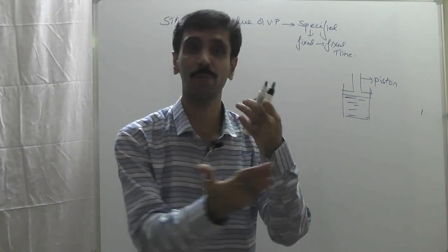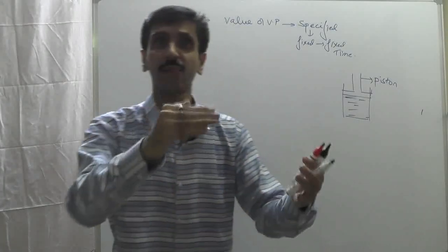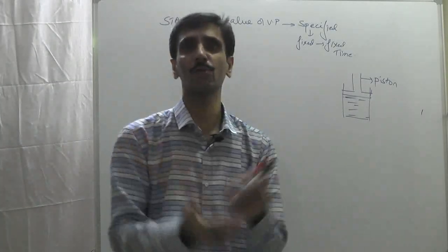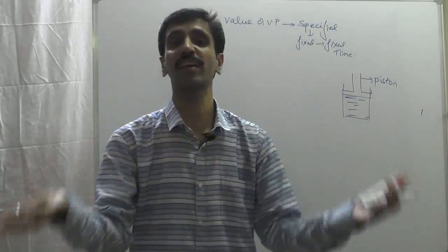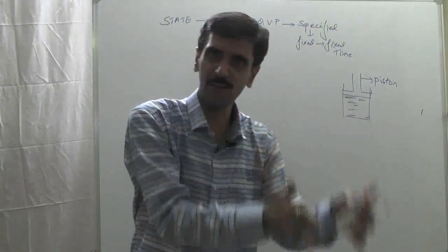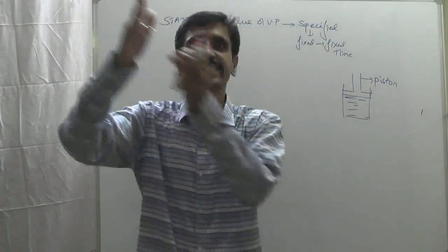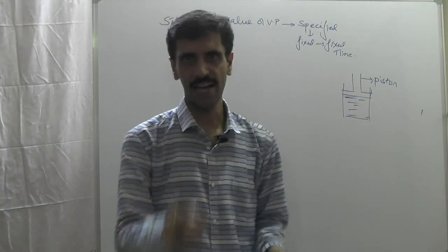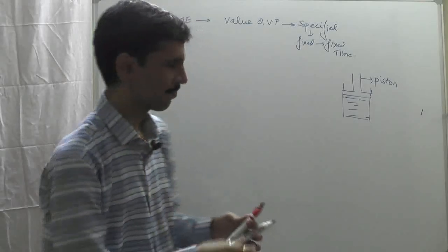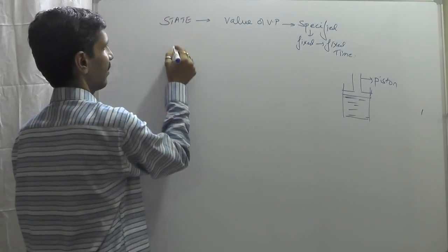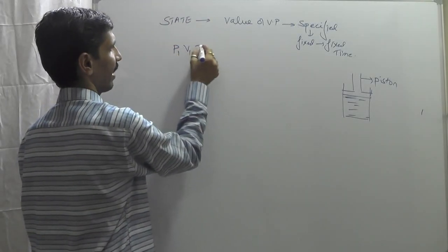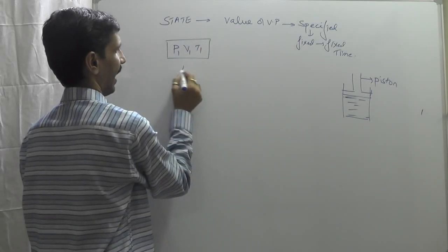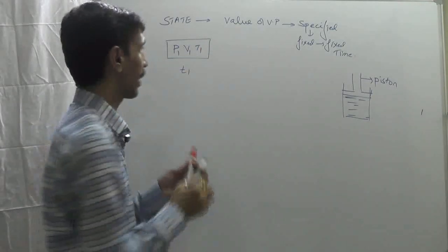When we talk about the gas, we have a value of pressure — pressure and volume are inversely proportional. Temperature is supposed to be 300 degrees Celsius. So pressure is fixed, volume is fixed, temperature is fixed, and I call this the state of the system. We consider this state as P1, V1, and T1 at time t1.